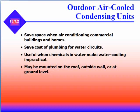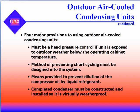Outdoor air-cooled condensing units save space for air conditioning commercial buildings and homes, save the cost of plumbing for water circuits, and are useful when chemicals or water makeup make water cooling impractical. They can be mounted on the roof, outside wall, or at ground level. There are four major provisions: there must be head pressure control if exposed to outdoor weather below operating temperature; a method of preventing short cycling must be designed into the system; a means to prevent dilution of compressor oil by liquid refrigerant; and the condenser must be constructed and installed to be virtually weatherproof.